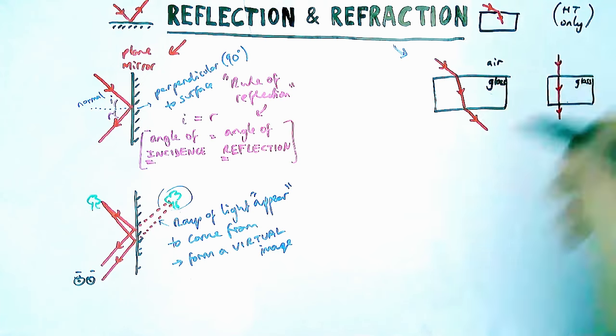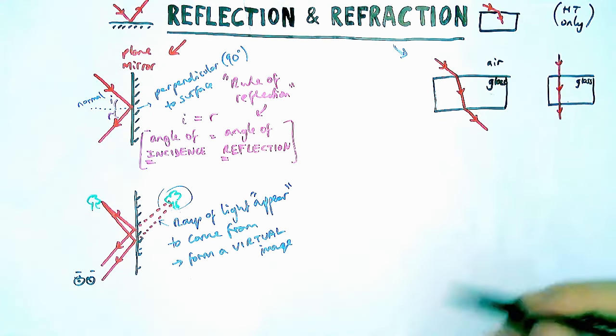Now we need to look at why this happens. What is going on here to mean that light can bend? We've talked about light going in straight lines. You've probably heard that since primary school.